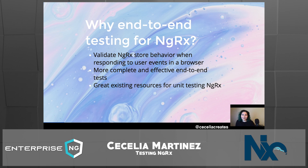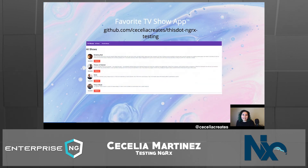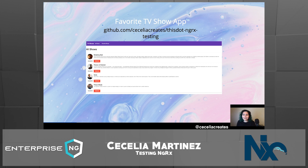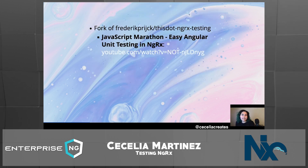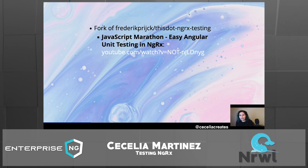Speaking of those existing resources, I leveraged one of them for the application we're going to be testing today. Our application under test is a favorite TV show app, and you can find the test code at github.com/acilia-create/this-dot-ngrx-testing. This application is a fork used for the JavaScript Marathon easy Angular unit testing and NGRX presentation. I highly recommend giving that a watch for examples on unit testing with NGRX.